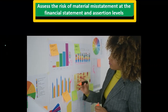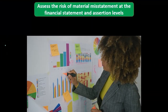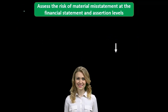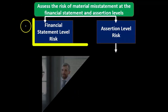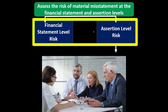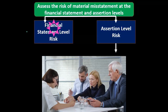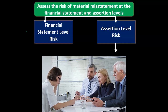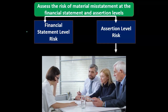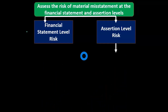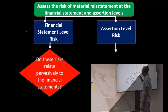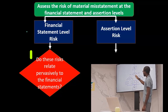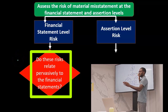Here's a flowchart that we'll go through that we can actually visualize — basically the thought process as we think through a material misstatement. We're going to assess the risk of material misstatement at the financial statement and assertion level. We have a risk of a material misstatement, and we're going to check that at both the financial statement level and the assertion level. We'll start with the financial statement level, because if we look at this risk and determine it can have an effect on the financial statements as a whole, our end goal is to give an opinion on whether or not the financial statements are free of material misstatements.